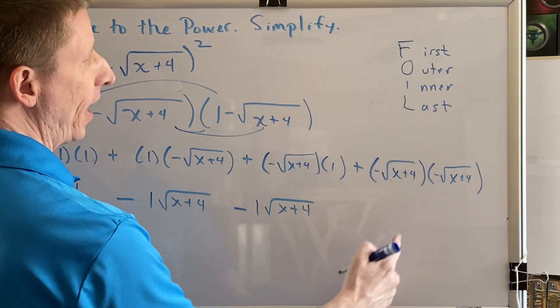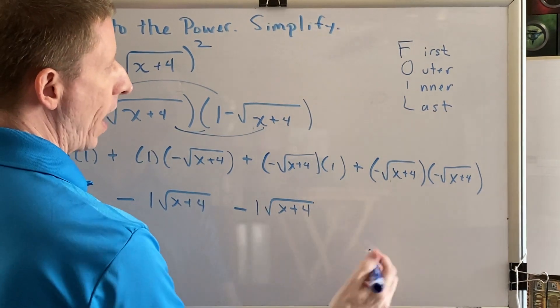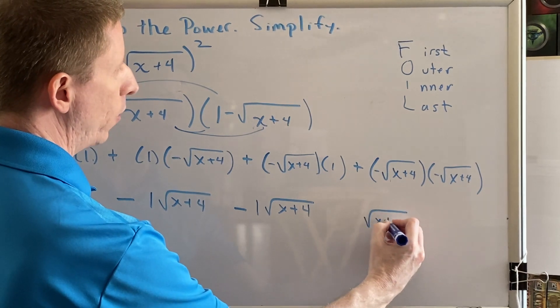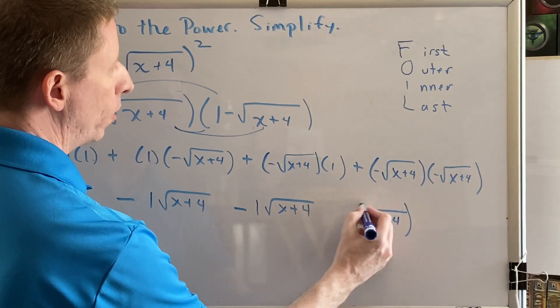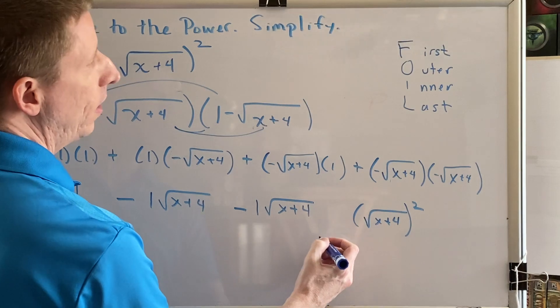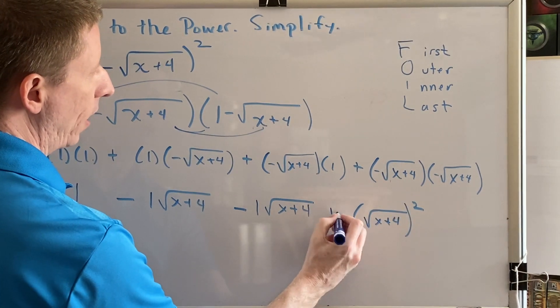A negative times a negative is a positive. And because the radicals match, this can be rewritten as the square root of x plus 4 all in parentheses squared. And because the result was positive and we're adding, we write plus.